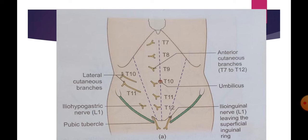Within the rectus sheath, the nerves pass behind the rectus abdominis, then pierce the rectus muscle and the anterior wall of the rectus sheath close to the median plane. They then divide into medial and lateral branches and supply the skin of the front of the abdomen.